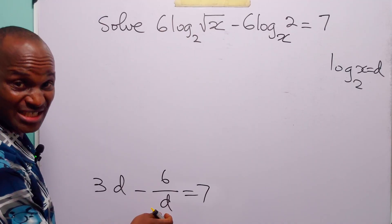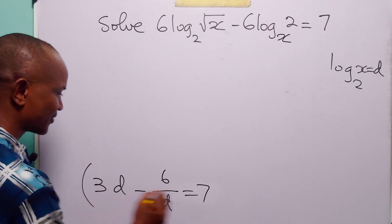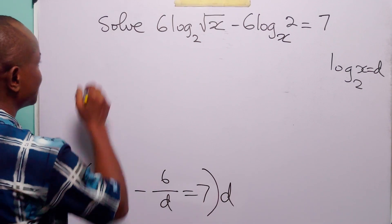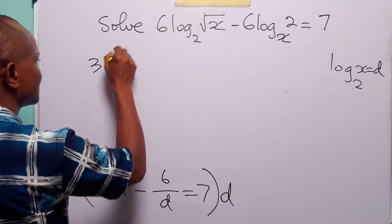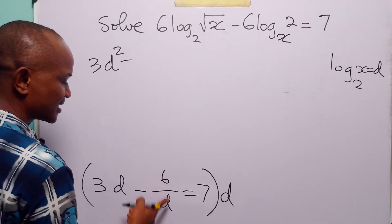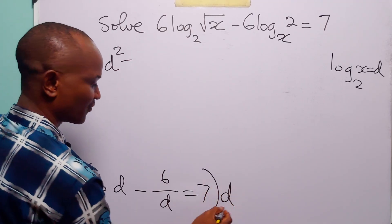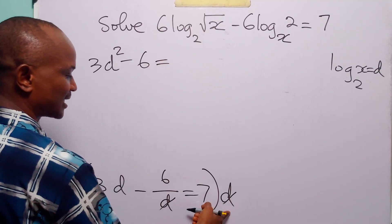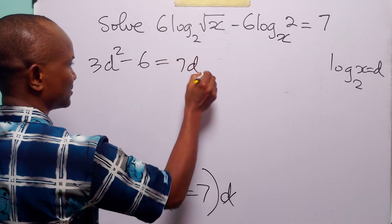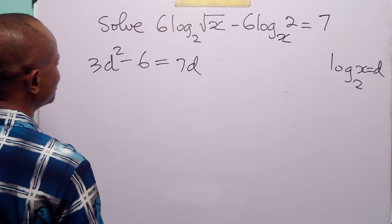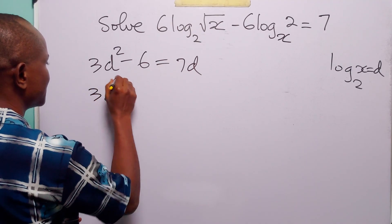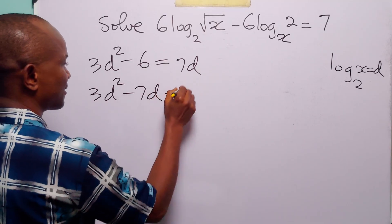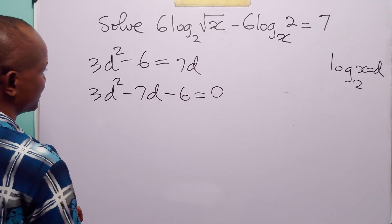To get rid of this fraction, let us multiply through the equation by d. 3d times d is 3d squared. Minus 6 over d times d — the d cancels — leaving us with minus 6. 7 times d is 7d. Rearranging this equation, we have 3d squared minus 7d minus 6 is equal to 0.